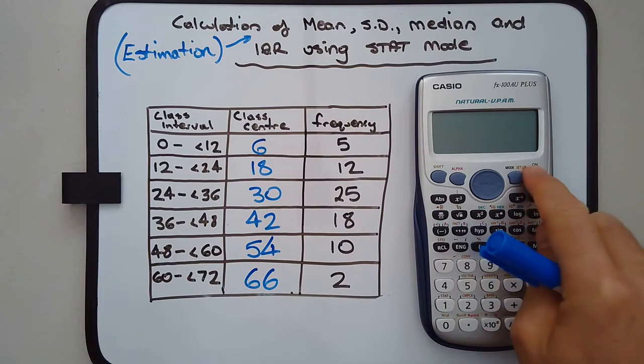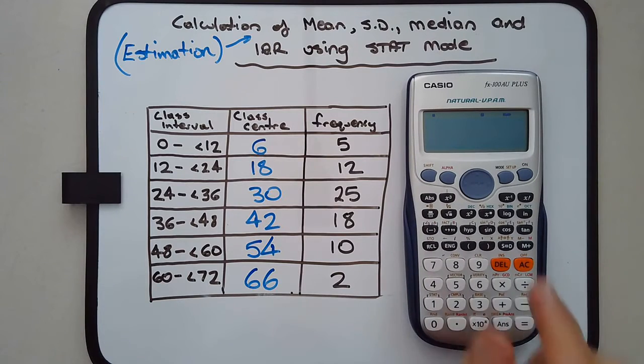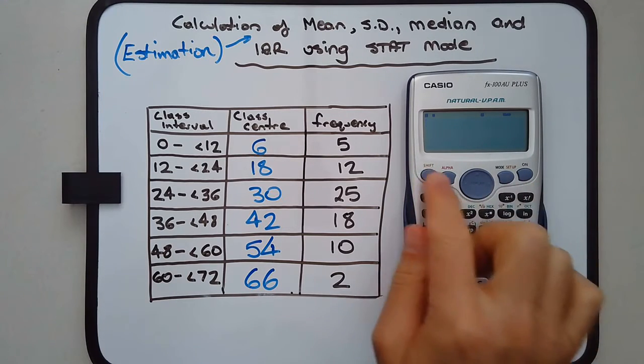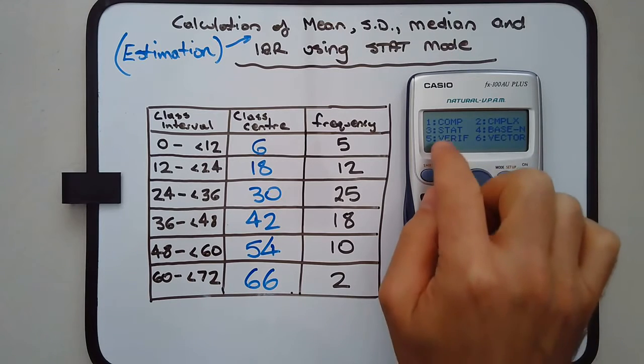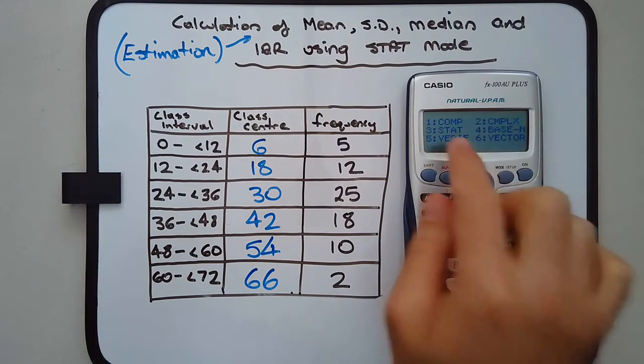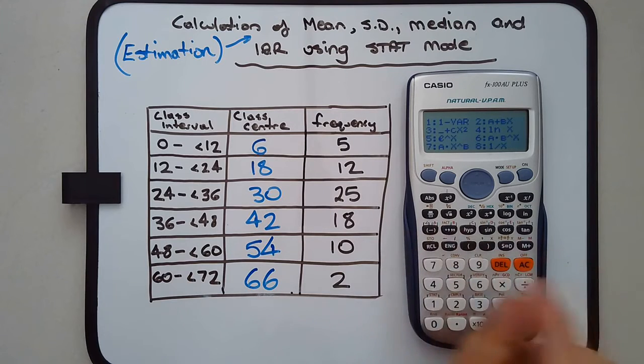Let's put it into stat mode. We press mode first. On the FX100AU+, it's mode 3. On the FX82, I think it's mode 2. So just be careful which mode to pick, but it'll say STAT.